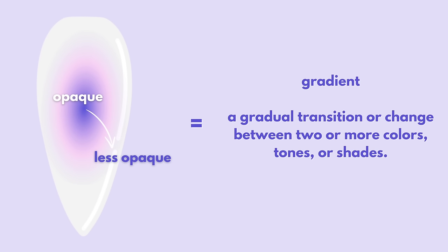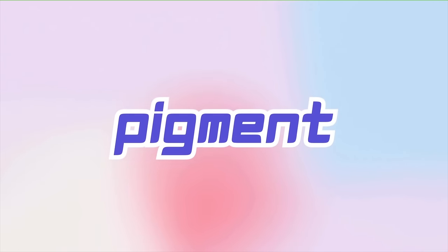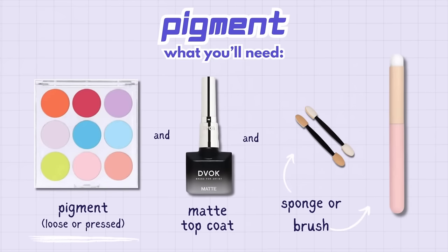So let's apply this theory to our first technique, which is using pigment powder. Creating an aura with pigment is achieved by using dry pigment powder on top of cured matte gel. For this technique, you're going to need pigment, loose or pressed, a matte gel, and a sponge and or brush.